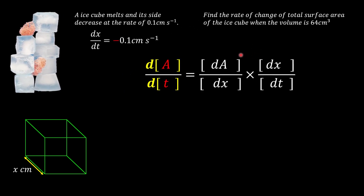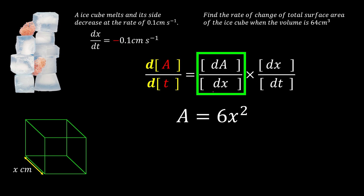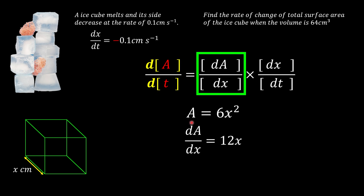We need to find dA over dx. A cube has 6 faces, each with area x squared, so the total surface area A equals 6x squared. Differentiating with respect to x using the power rule: dA over dx equals 12x.